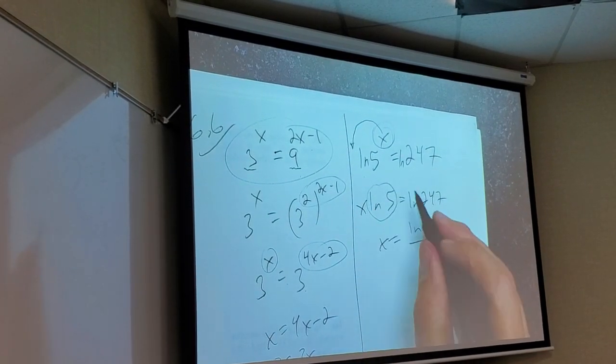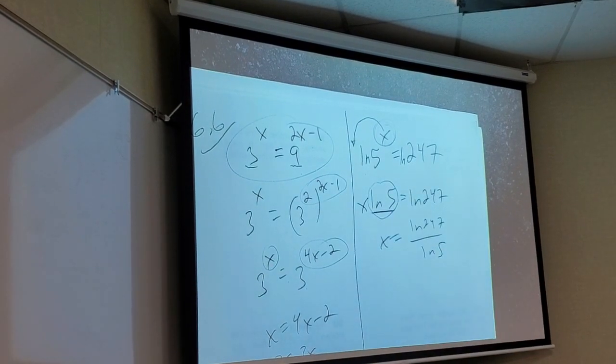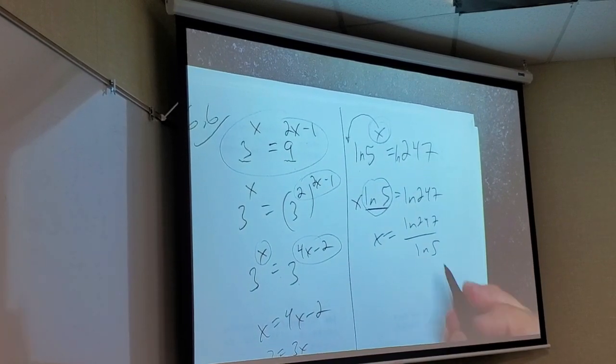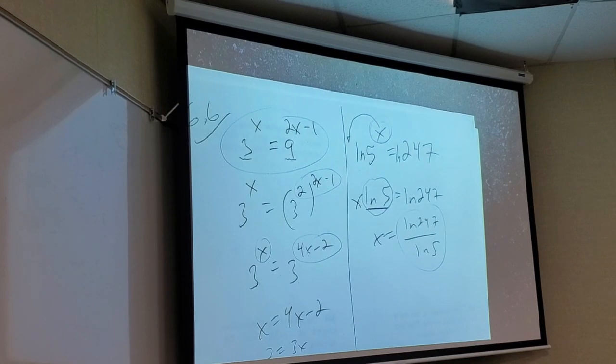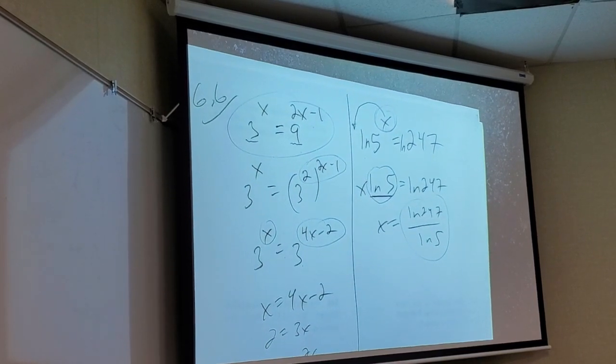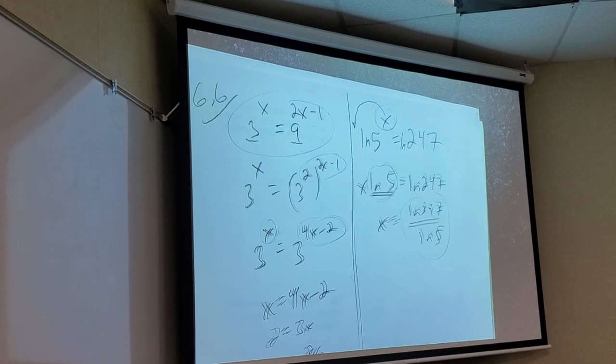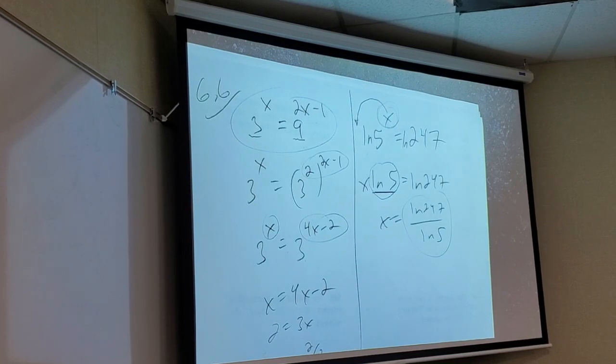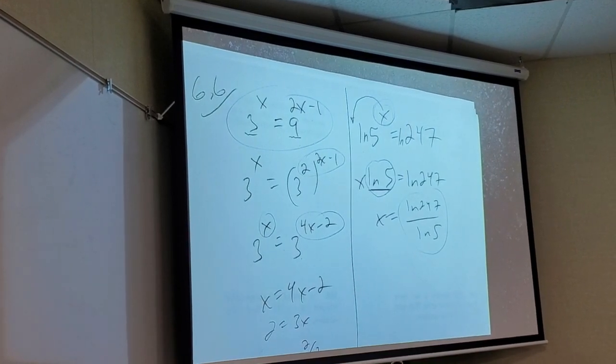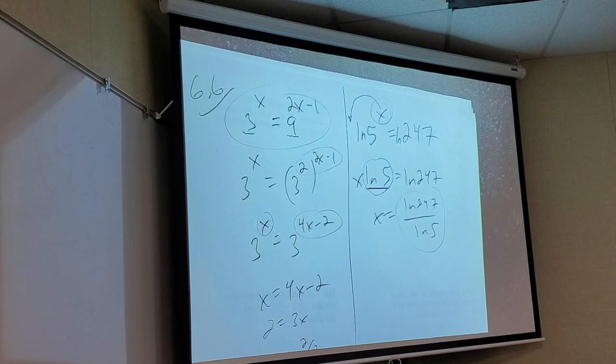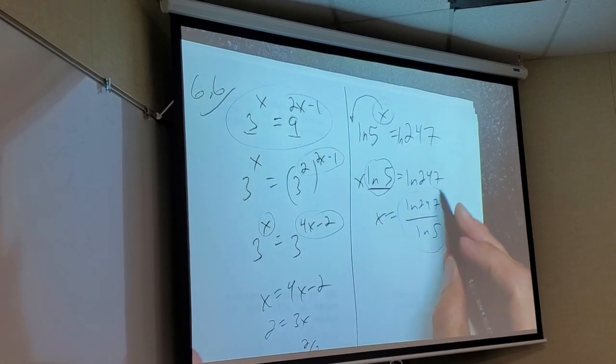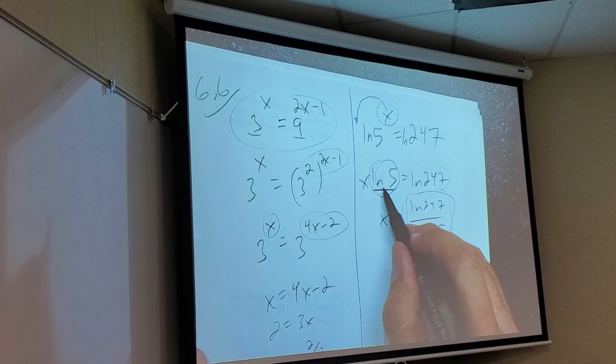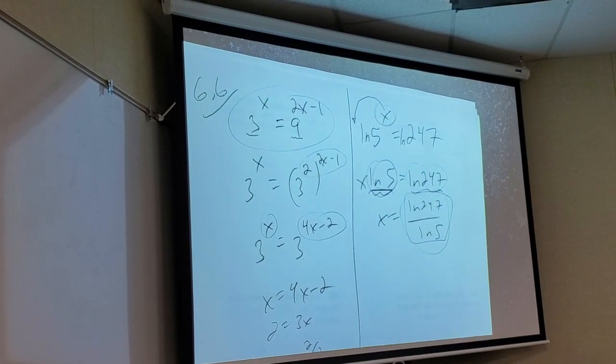And then I just have to divide both sides by natural log of five. Remind yourself, this is one number. These two are inextricably intertwined, so they have to all go together. Can somebody do this in your calculator real quick? Do not make these into decimals until you get here, because you're going to approximate both of those, and when you divide, it's going to be even more off.